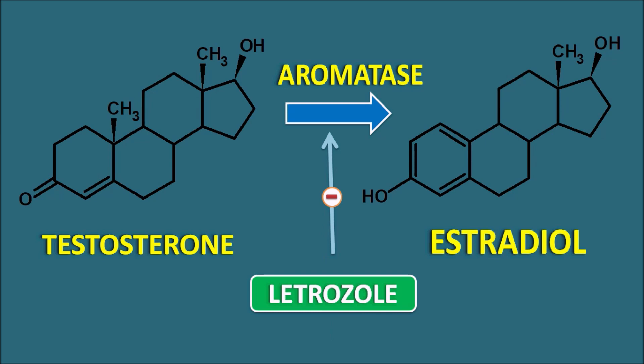Letrozole can block this aromatase enzyme, thereby inhibiting the conversion of androstenedione to estrone and testosterone to estradiol. In this way, within peripheral tissues and ovarian follicles, estrogen synthesis is blocked by Letrozole. Letrozole can inhibit estrogen production in peripheral tissues, therefore reducing estrogenic activity in the breast tissue, resulting in an inhibitory effect on breast cancer. That is why Letrozole is used in the treatment of postmenopausal breast cancer. Since it does not directly block estrogen receptors, it is not suitable for premenopausal breast cancer where estrogens are synthesized within the ovaries.